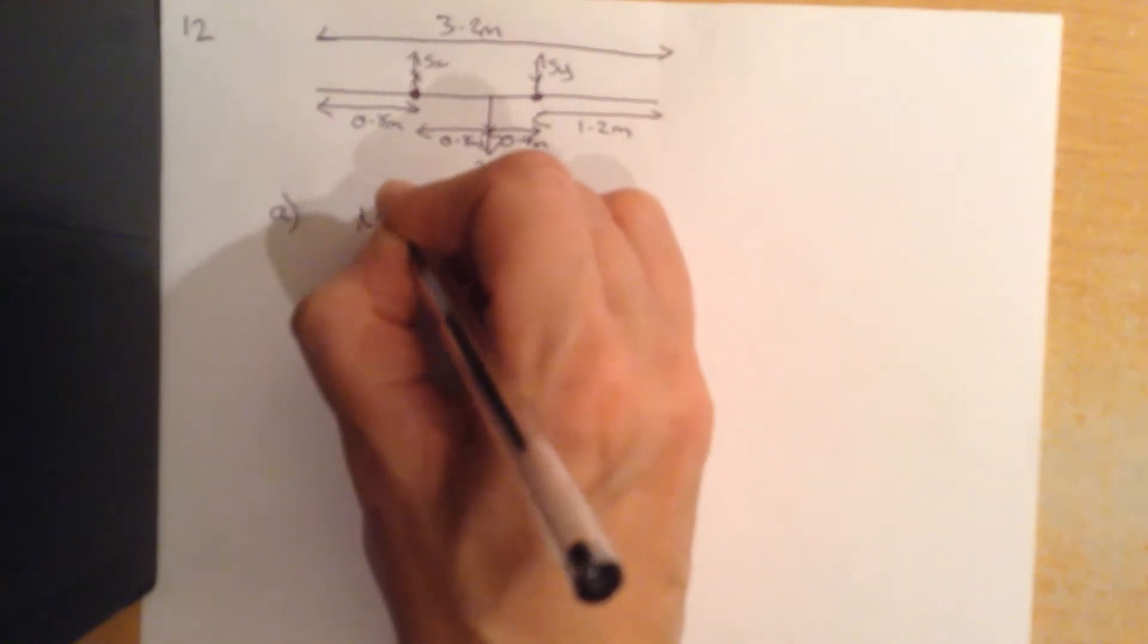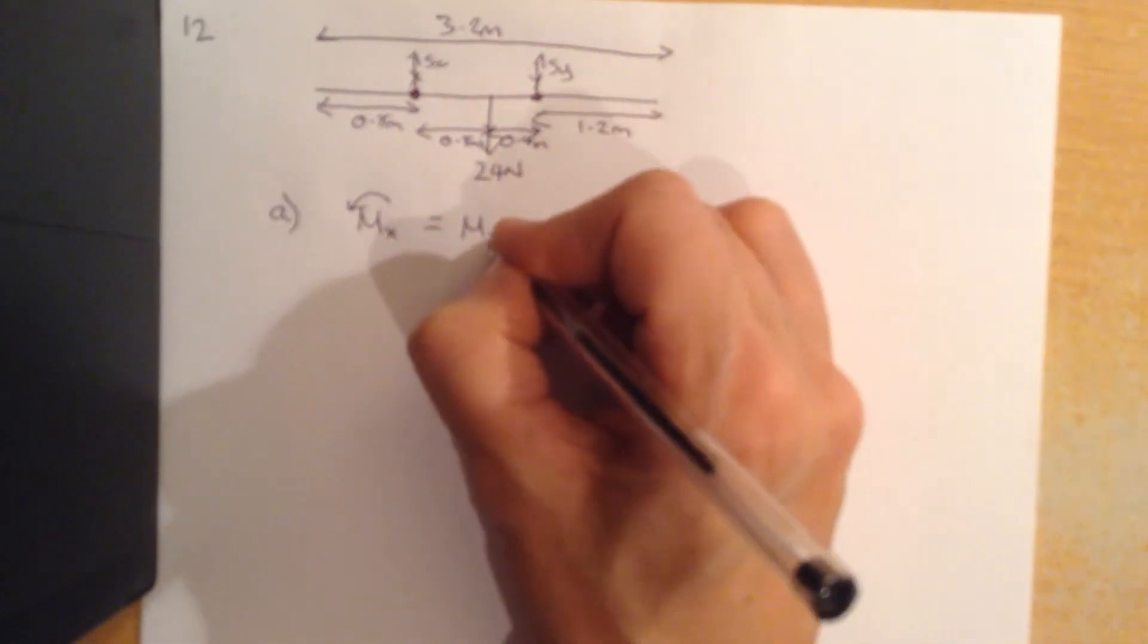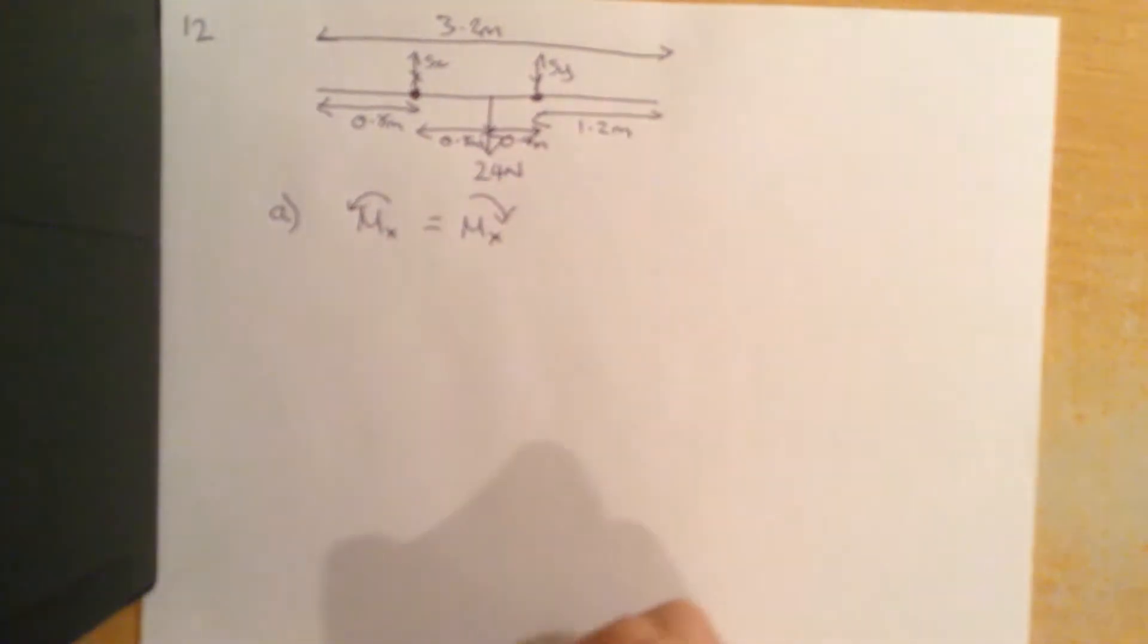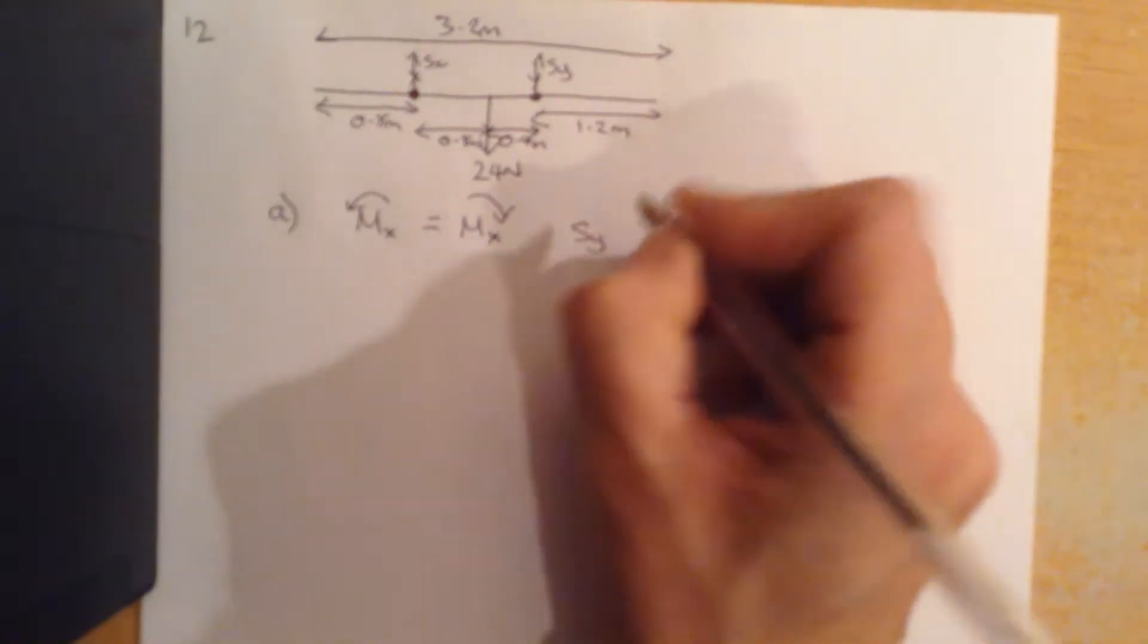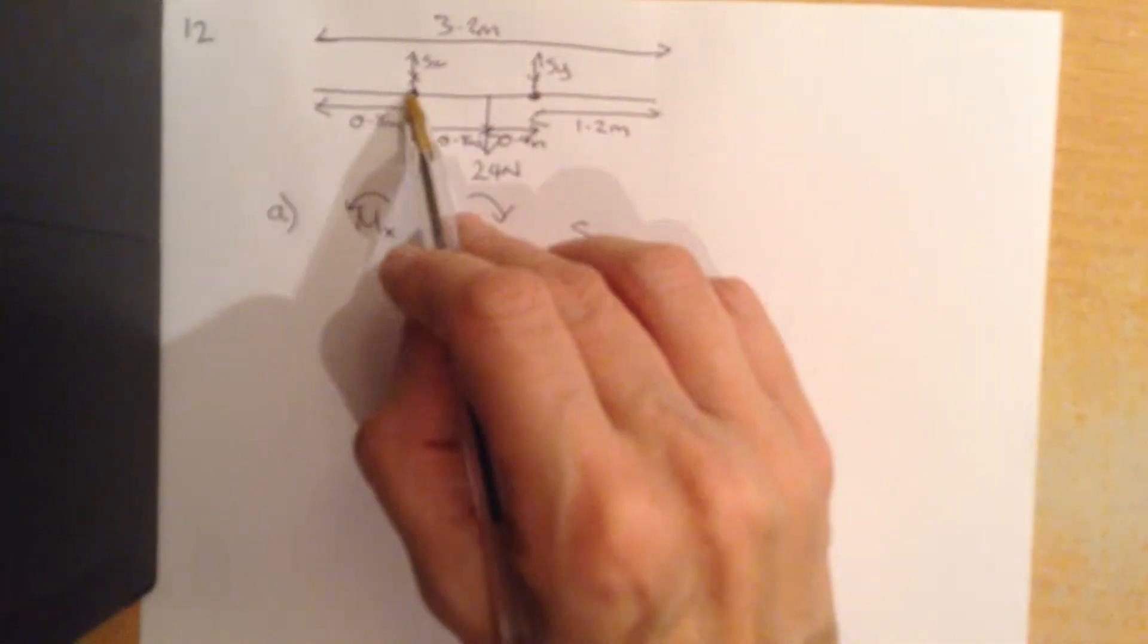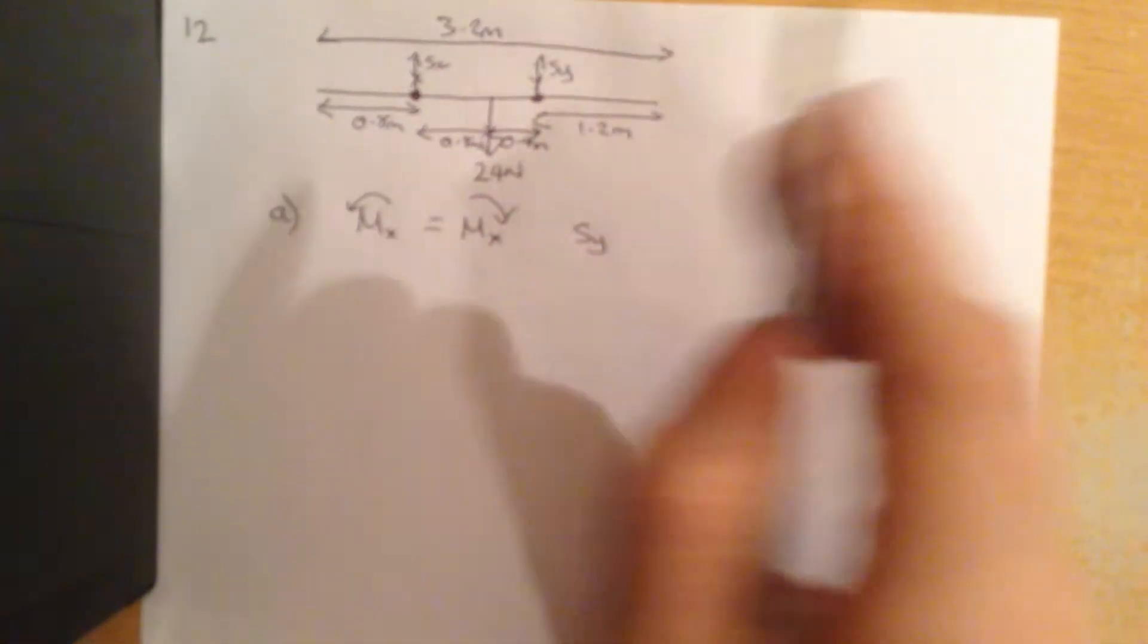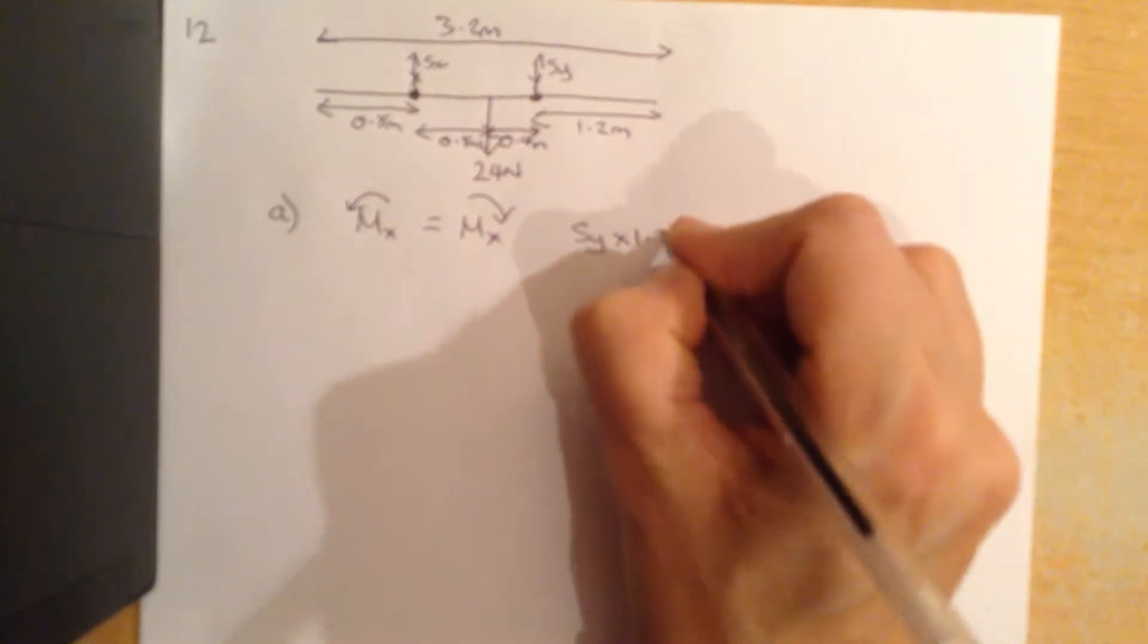We need to get SX and SY, so we're going to start by taking moments as we always do. I'm going to take moments about X and say that the anticlockwise moments have to equal the clockwise. So SY is our anticlockwise and it is a distance from here of 0.8 plus 0.4, so that is 1.2 metres.